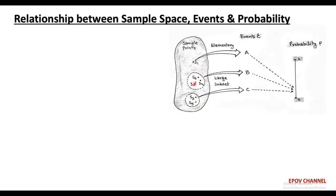Now, on the basis of an event statement, we can represent different events. Let us call them event A, B and C. Here, sample point S1 represents an elementary event A. For example, in the case of throwing a dice, the event of one dot showing corresponds to only one sample point S1, and it is called an elementary event.